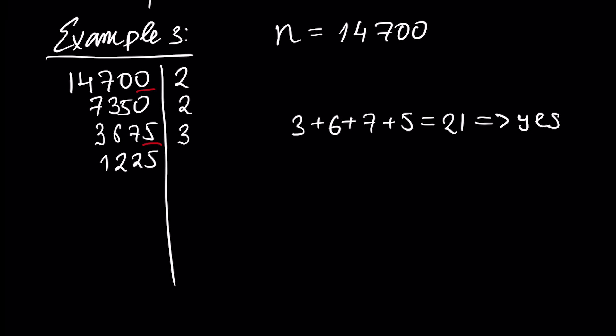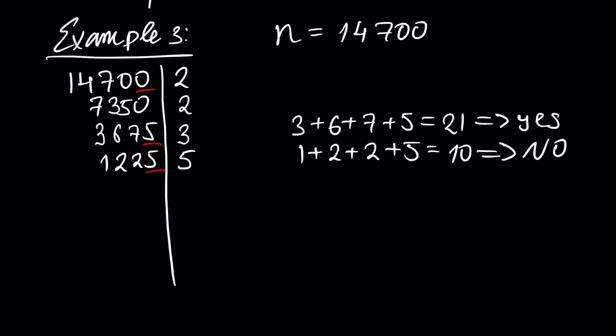Is 1,225 divisible by 3? We check: 1 + 2 + 2 + 5 = 10. 10 is not divisible by 3, so no. The next prime number is 5. Is 1,225 divisible by 5? Yes. Dividing gives 245. Is 245 divisible by 5? Yes, and the result is 49. 49 is divisible by the next prime number 7, giving 7. Then 7 divided by 7 is 1, which is the finishing point of our algorithm.